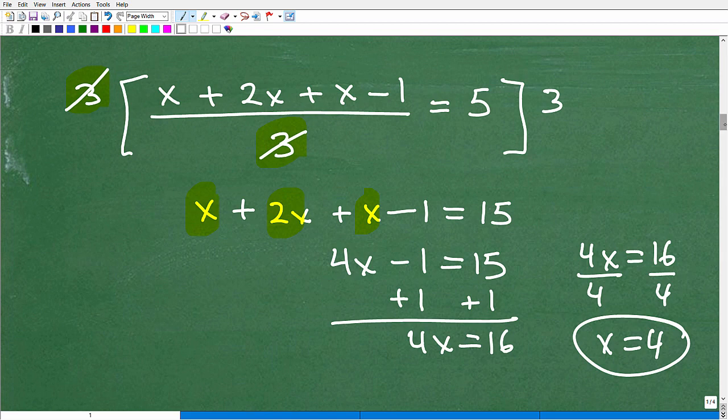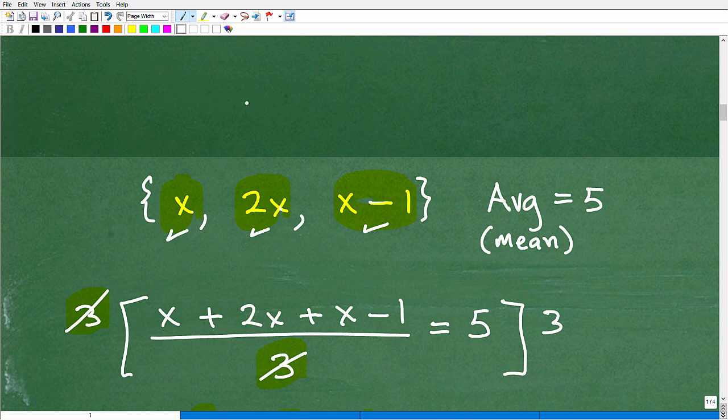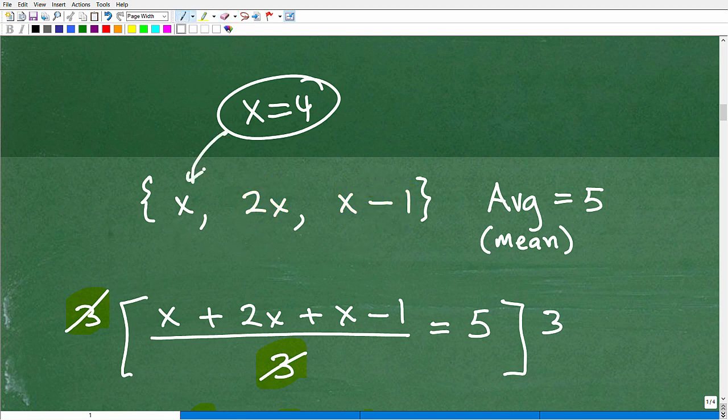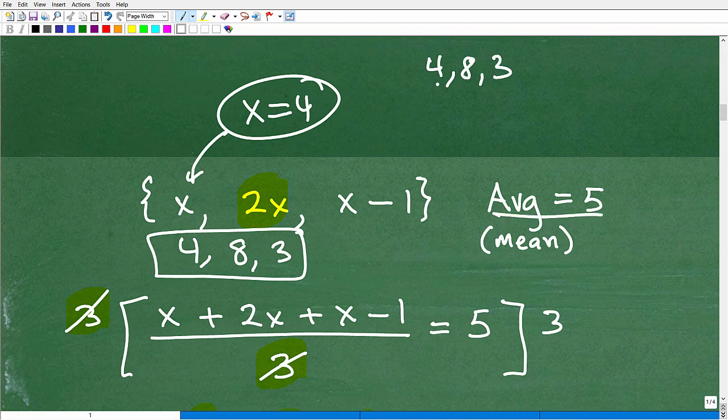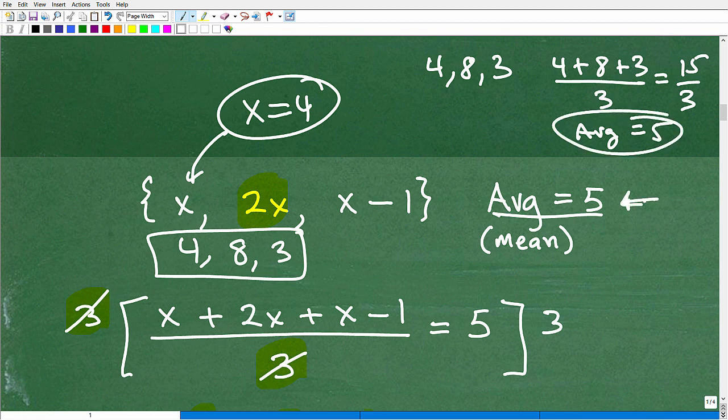So x equals 4. Let's go back up here. I told you these were the numbers. So x is 4, so our actual values are going to be: this is 4. And this is 2x, so that's 2 times 4, which is 8. And this is x minus 1, which is 4 minus 1, so that is 3. Let's check that. Are 4, 8, and 3 - is the average of those three numbers 5? Let's see: 4 plus 8 plus 3 divided by 3 numbers. This is going to be 12 plus 3, that's 15 divided by 3. Take a look at that - the average there is, in fact, 5, just like what the problem stated. So these problems you will encounter.